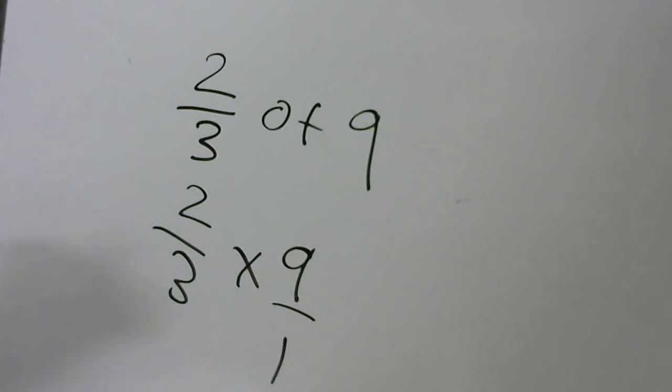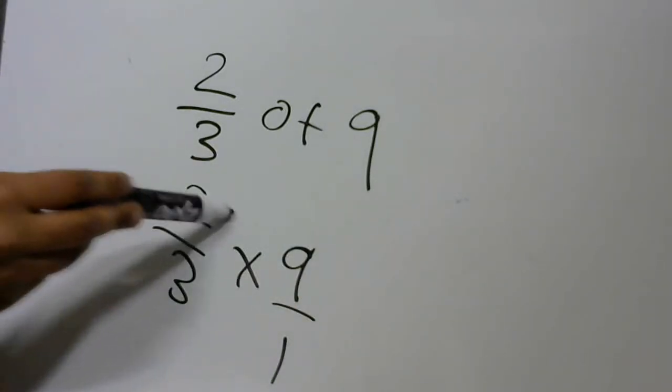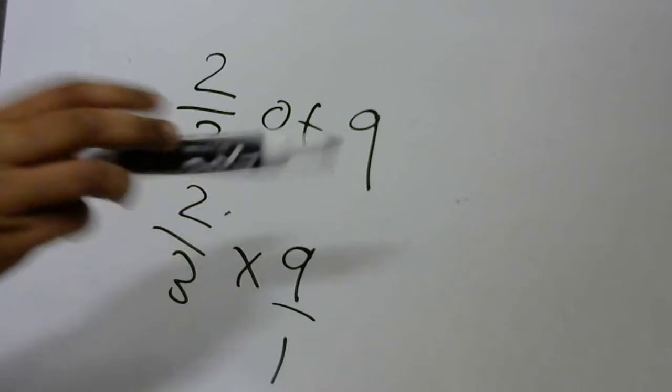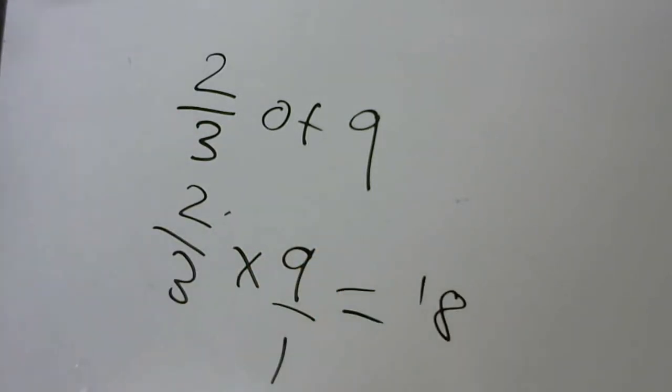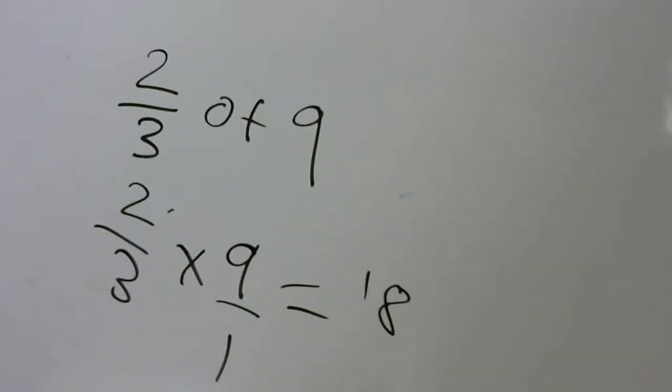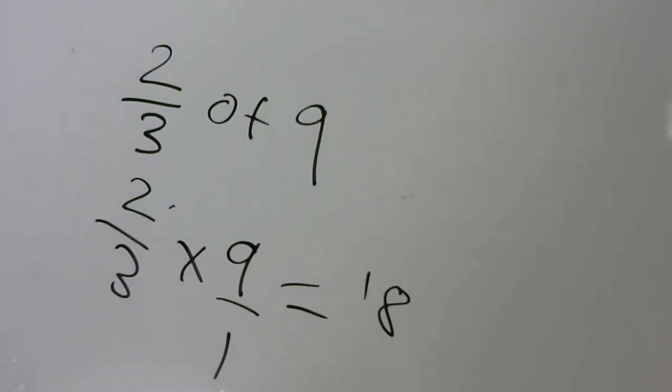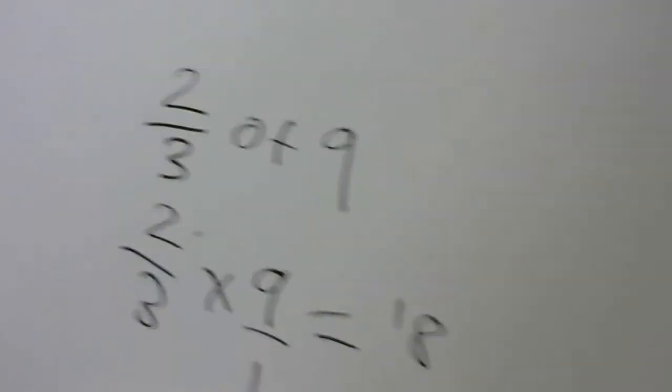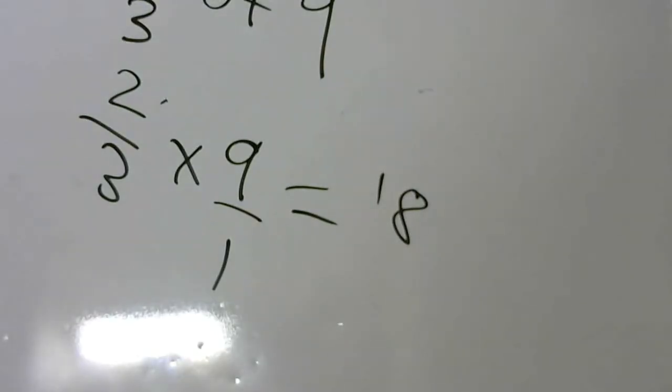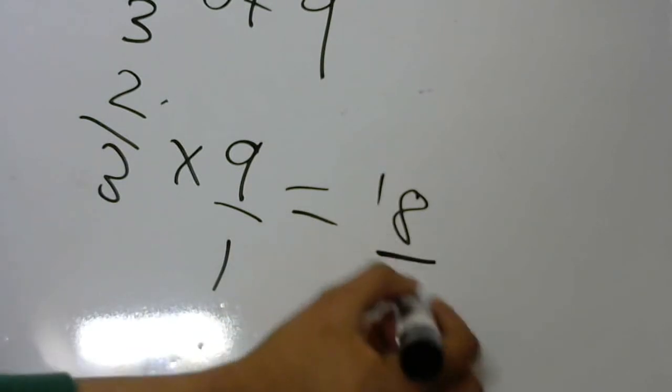So if you do that, 2 times 9 equals 18, and 3 times 1 equals 3, so we get 18 by 3.